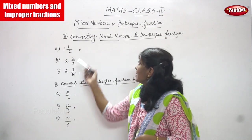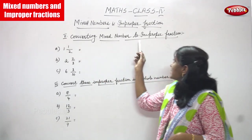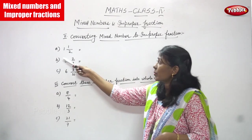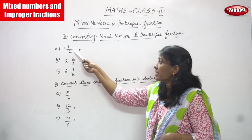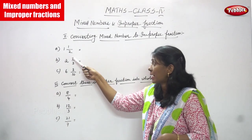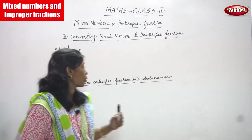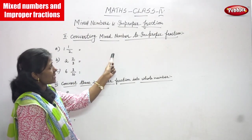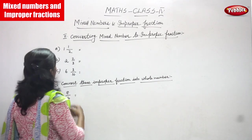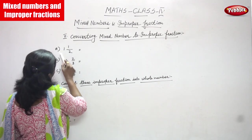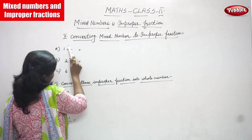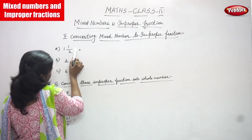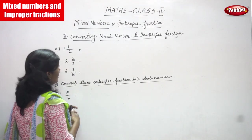Now we are going to see converting mixed number to improper fraction. The first question is 1 and 1/2, that is 1 and a half. Here, 1 is a whole number and half is a proper fraction, so it is a mixed fraction. Now we are going to solve and find the improper fraction.